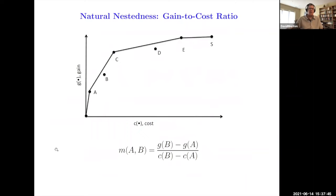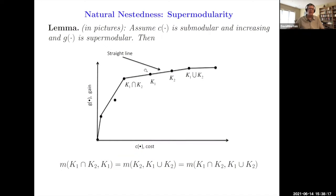So what does supermodular have to do with this idea of nestedness? Here I'm showing on the y-axis the gain function and on the x-axis the cost function. This m is just a slope, the growth in the gain, delta gain by delta cost. Here's a lemma with no real math and just pictures. If you've got a submodular cost function that's increasing and you have a supermodular gain function, then suppose that you have two points, K1 and K2. They're both solutions on the concave envelope of the efficient frontier. This point here is not on the concave envelope, but these kink points are on that concave envelope. The lemma says that under this supermodularity, K1 intersection K2 and K1 union K2, those slopes form a straight line.